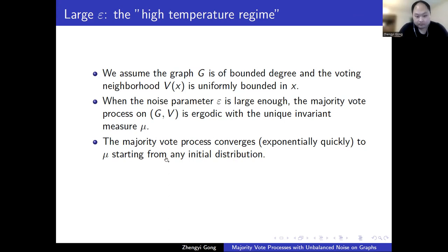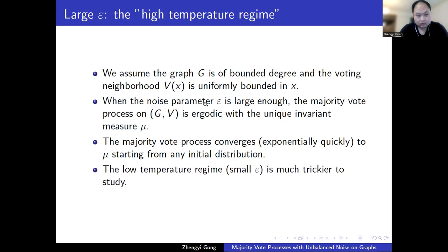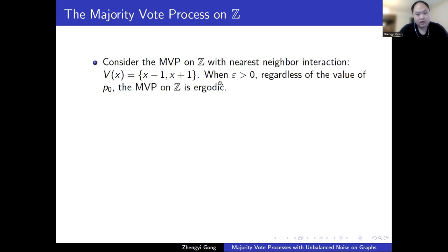In this regime (large ε), the majority vote process converges exponentially fast to the invariant measure from any initial distribution. We call this the high-temperature regime, inheriting terminology from the Ising process, since the noise parameter ε plays a similar role to temperature. At low ε — the low-temperature regime — behavior is much trickier to study and will be the focus of the talk.